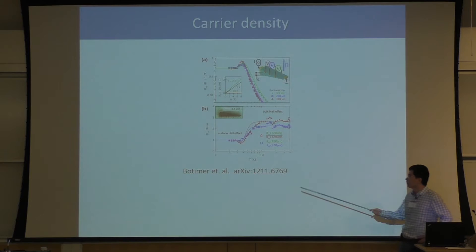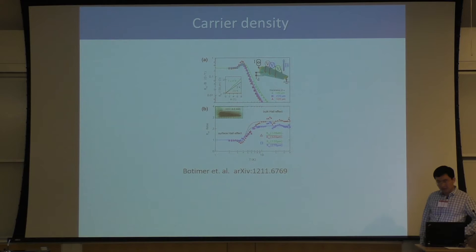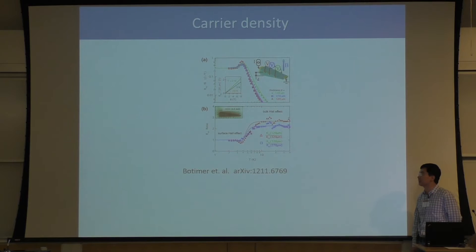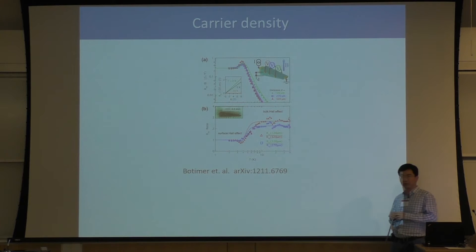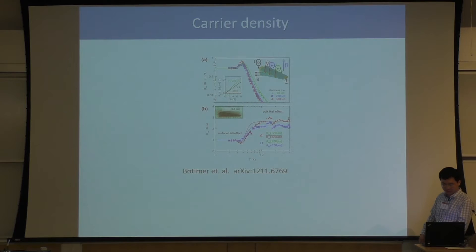About two or three weeks after my colleague announced their data, the UC Irvine group announced their Hall effect data for SMB6. They measured the carrier density in SMB6, changing the sample thickness and measuring the number of electrons versus sample thickness. At high temperature, the number of electrons is proportional to the thickness. But at low temperature, the electron number is independent of sample thickness — suggesting everything is happening on the surface.